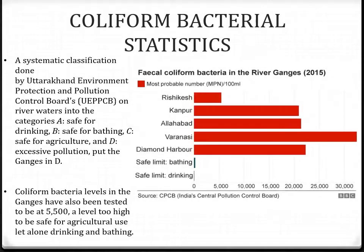Coliform bacterial statistics: A systematic classification done by the Uttarakhand Environment Protection and Pollution Control Board categorized river water into: A — safe for drinking; B — safe for bathing; C — safe for agriculture; D — excessive pollution. The Ganga has been placed in category D. Here we have a graph showing the faecal coliform bacteria in the river Ganga with concentration in most probable number. In Varanasi, it is more than 30,000.